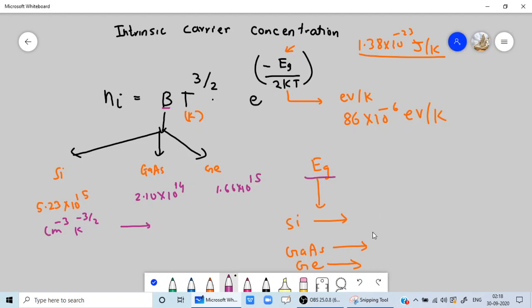The band gap energy for Si is 1.1 electron volt, and then we have 1.4 electron volt for gallium arsenide, and for germanium we have 0.66 electron volt. This is the data that you will need to calculate intrinsic carrier concentration at any given temperature.